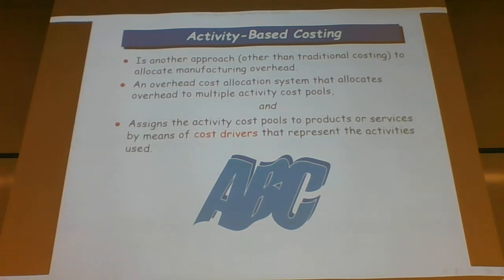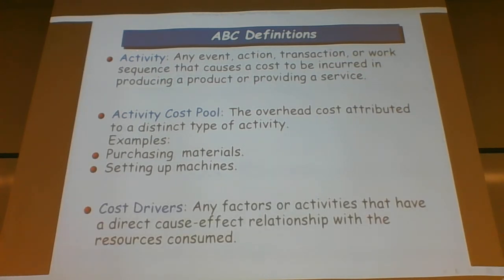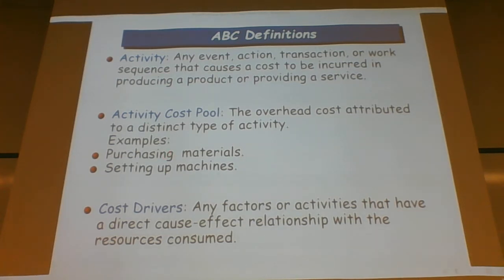In ABC we start looking at allocating overhead costs by way of multiple activity cost pools and multiple cost drivers. An activity is any business action that causes a cost to be incurred. Activity cost pools are overhead costs attributed to a distinct type of activity. Two examples are purchasing materials and setting up machines. Note that we're talking about the cost of ordering and procuring materials, not the cost of the materials themselves.